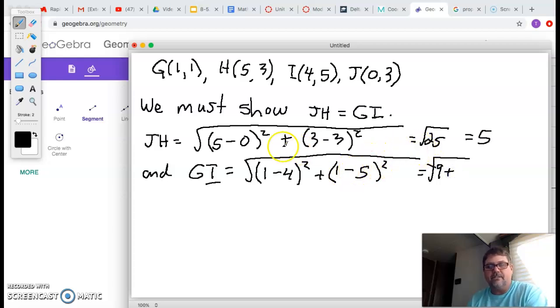1 minus 5 is negative 4. Square it. I think we get a 16, which is equal to square root of 25. And that's also 5.